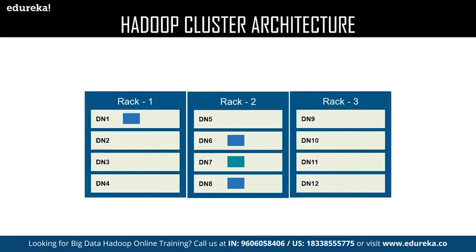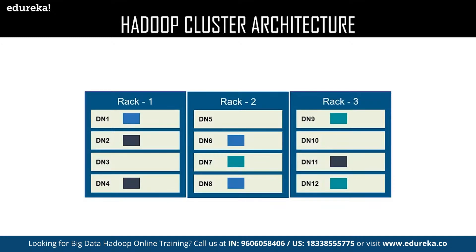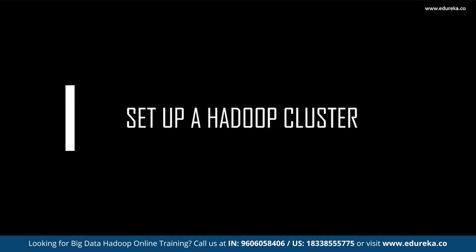Now let us deal with a different block. We have a new block in Rack 2, Data Node 7. This is the local rack for the data block stored in Data Node 7. The replicas of Data Node 7 are stored in the remote rack, Rack 3, in Data Node 9 and Data Node 12. We also have a new data block stored in Data Node 11; Rack 3 is the local rack for it. The replicas of Data Node 11 are stored in the remote rack, Rack 1, in Data Node 2 and Data Node 4.